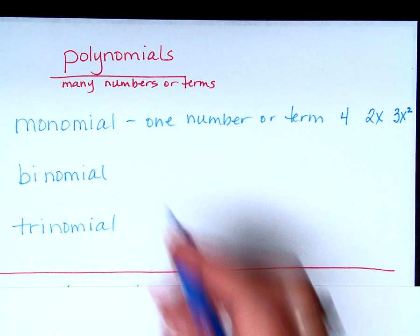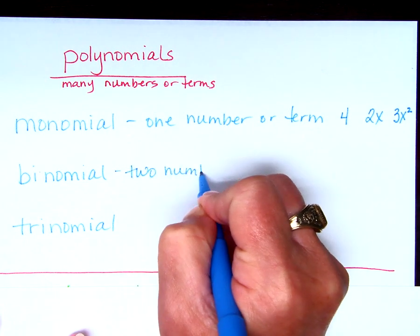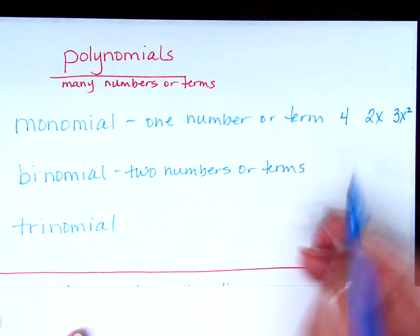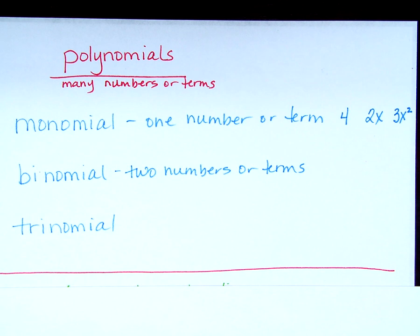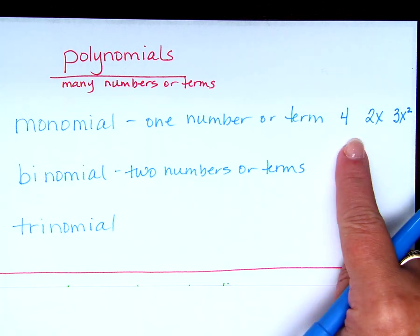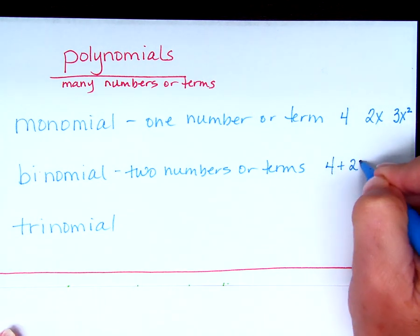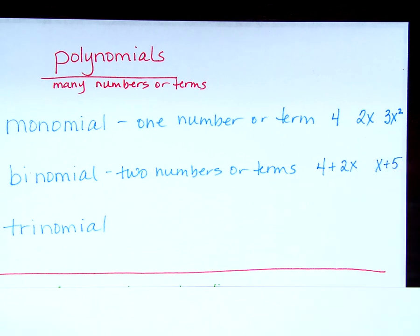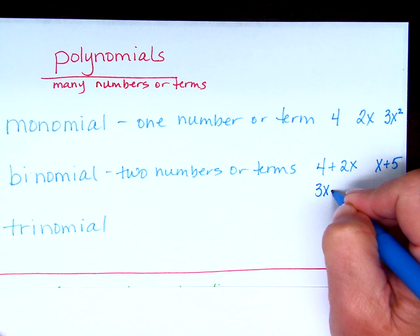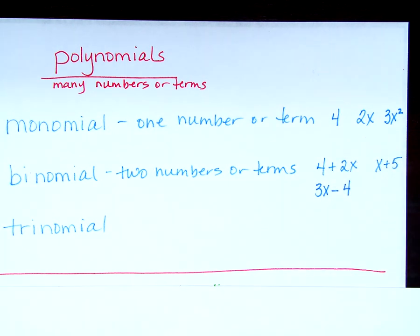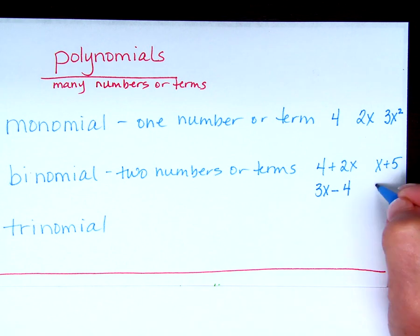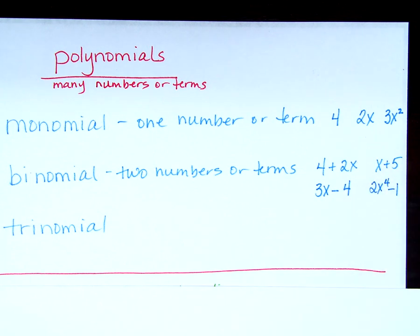What about a binomial? Two numbers or terms. How do I make a binomial? Adding or subtracting monomials, right? So 4 + 2X is a binomial. X + 5 is a binomial. 3X - 4 is a binomial. And 2X to the fourth minus 1 is a binomial. Two monomials added or subtracted.